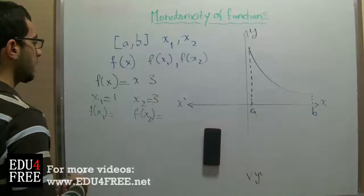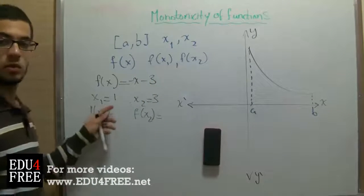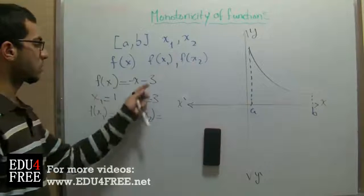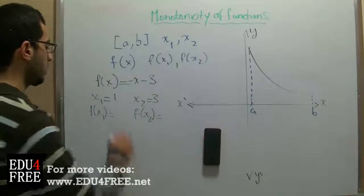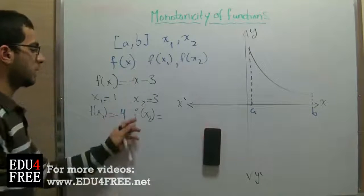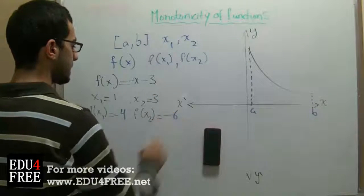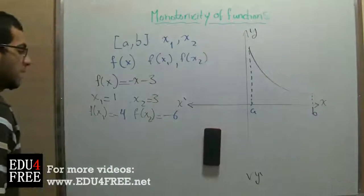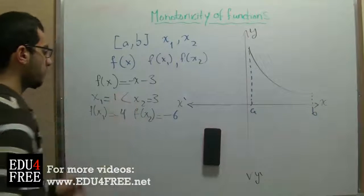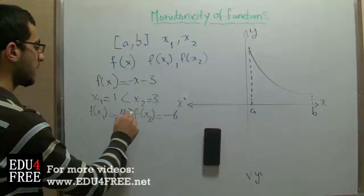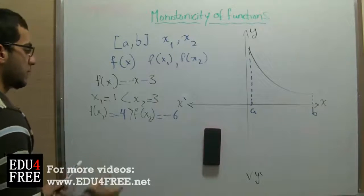But if the function equals negative x minus 3, with x1 equals 1 and x2 equals 3, then f(x1) will be negative 1 minus 3, which is negative 4, while f(x2) will be negative 3 minus 3, which is negative 6. Now it's the opposite: x1 is less than x2 while f(x1) is higher than f(x2), so the function will be decreasing.